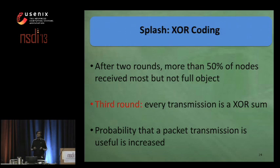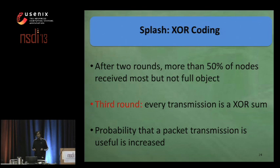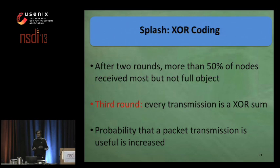The problem was that different nodes had different missing packets, so one more simple round of dissemination was not that useful. Accordingly, we have a third round based on XOR coding, in which every packet transmission is an XOR sum of a predefined number of object packets.